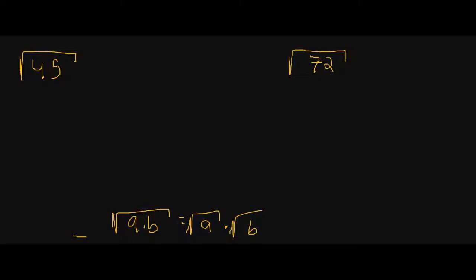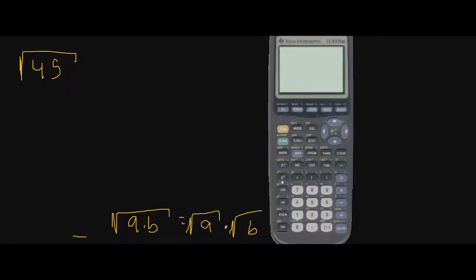We're going to need this conjecture to be able to solve this problem. If I go to my calculator and try doing the square root of 45, I'm going to get a decimal answer. Whereas if I do something like the square root of 16, I get a whole number because 4 times 4 is 16. The square root of 45 is not a perfect whole number — it gives us a decimal. So we don't want a decimal answer.